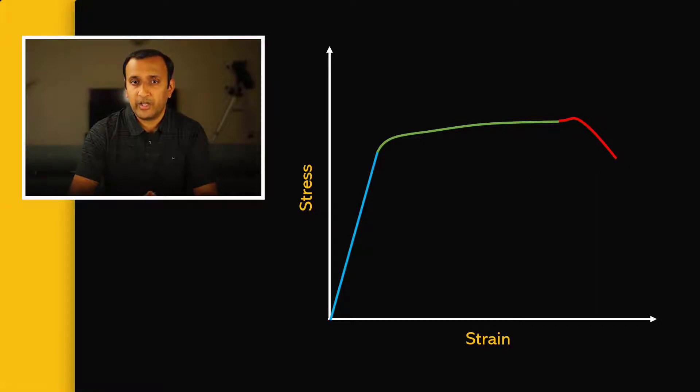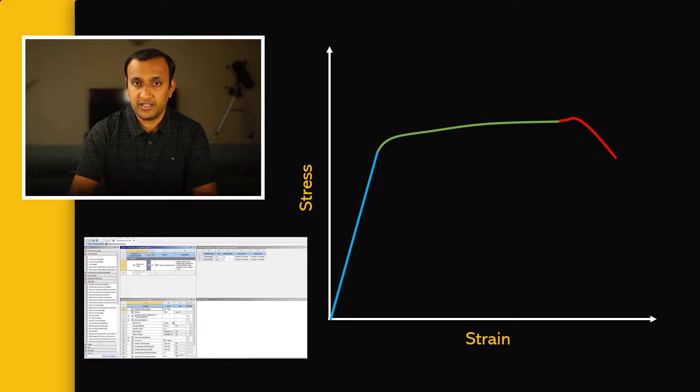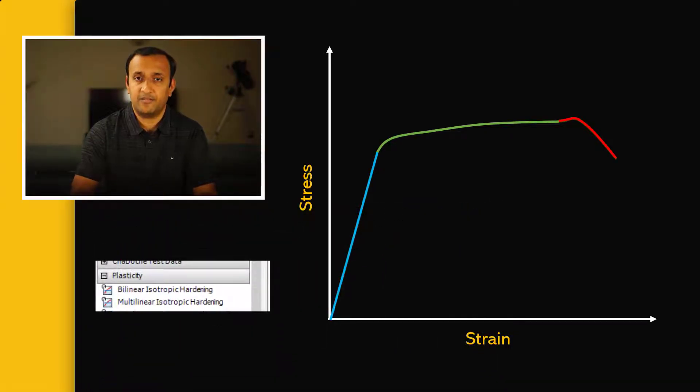In ANSYS Mechanical, we can model the strain hardening portion of the curve using either a bilinear or a multilinear hardening model. A bilinear hardening rule assumes a linear strain hardening portion and is defined using a tangent stiffness, which is the slope of this line. A multilinear hardening model uses a piecewise linear function to model the nonlinear strain hardening response until necking begins. It does not support the portion of the curve with negative slope. There are other material models available in ANSYS Mechanical that can capture damage in the material, but the multilinear model can only capture the response up to onset of necking.